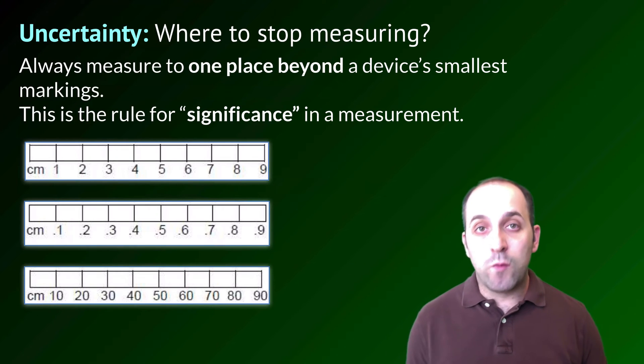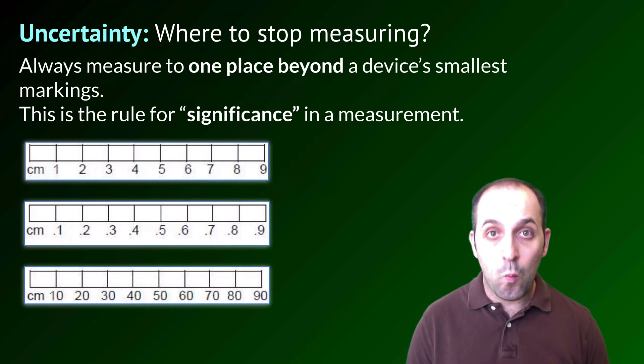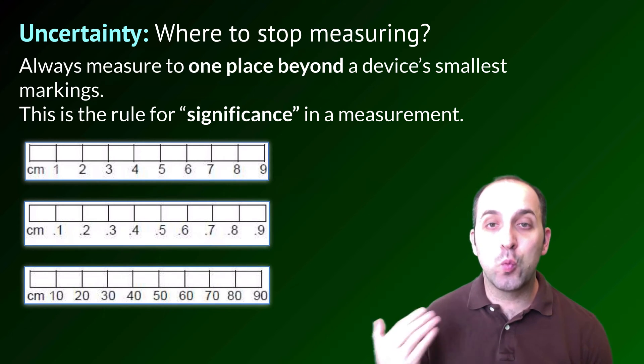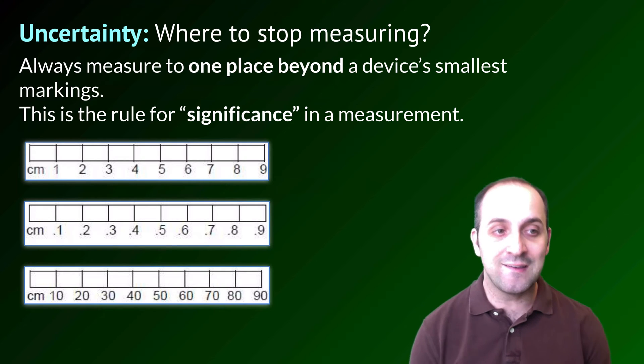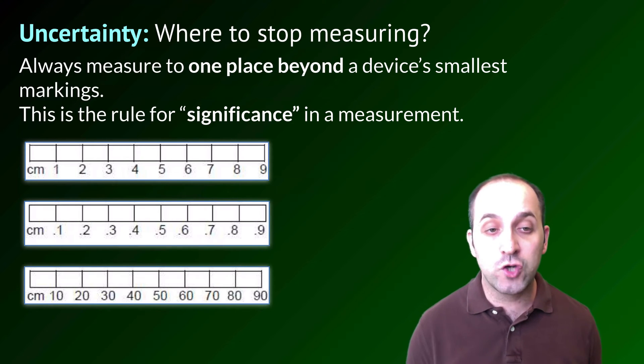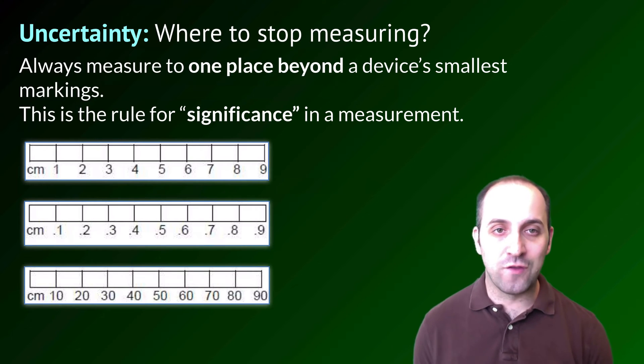The thing that we have to deal with when we're making measurements in the laboratory is the uncertainty. Where do we stop measuring? The rule is that we always measure to one place beyond the device's smallest markings. This is going to be the rule for determining the significance in a particular measurement. I've got three different rulers on this page.